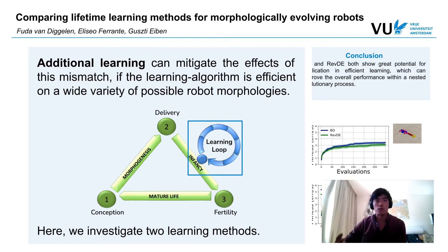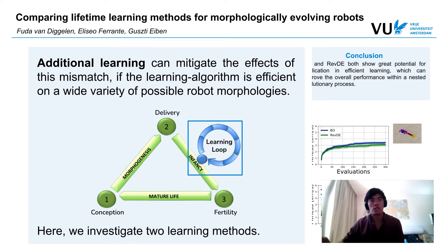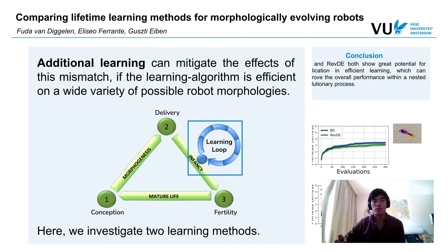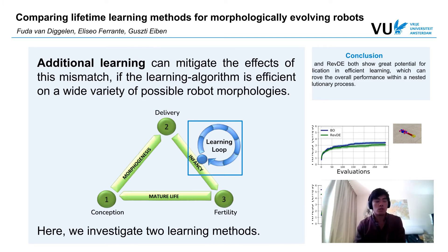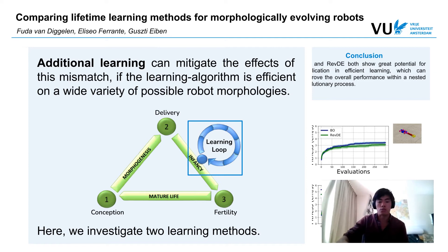A solution we propose is the addition of an extra learning step in the life of a robot itself. This additional learning loop can mitigate the effect of this mismatch by fine-tuning the controller in a new baby robot. A requirement for such a learning method is that learning should be very efficient, because every additional evaluation adds on top of the evolutionary algorithm, and furthermore the learning itself should not be biased or influence the fitness of the robot morphology — so it should not favor certain shapes or bodies.